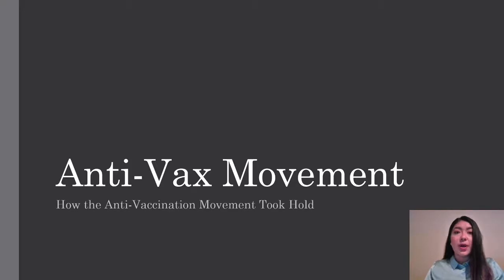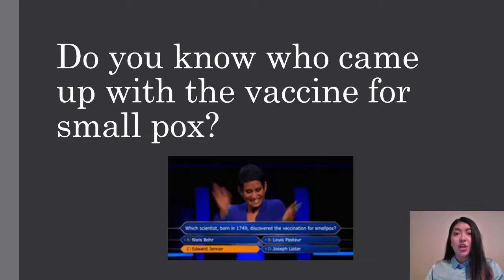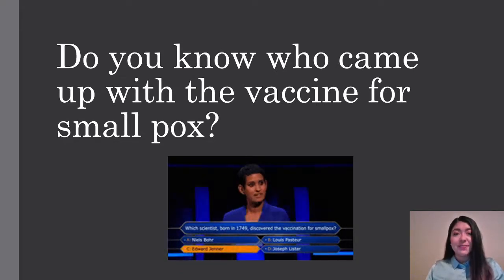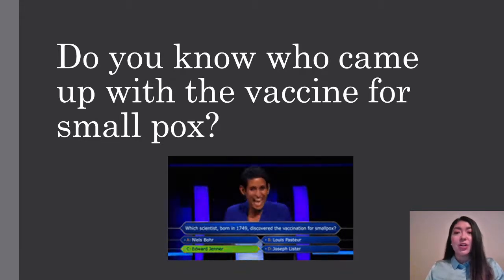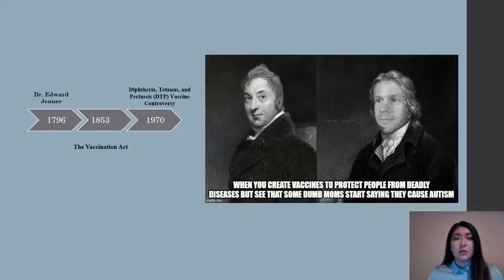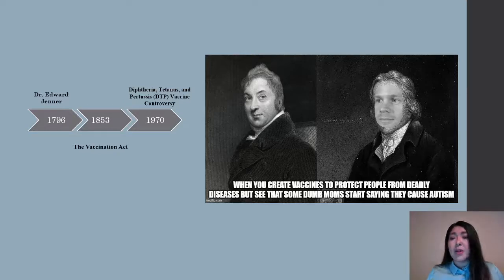In this section, we're going to talk about how the anti-vaccination movement took hold. Do you know who developed the vaccine for smallpox? That's right, it was Edward Jenner, and we're going to talk about him first. Widespread vaccination began in the 1800s, and ever since then, anti-vaxxer groups have also been prevalent. This pictured here on the left is Dr. Edward Jenner.